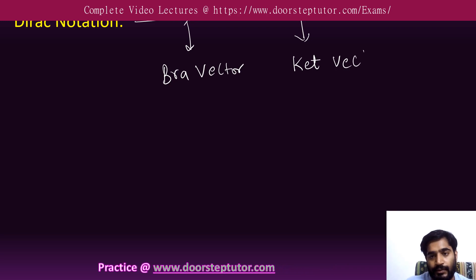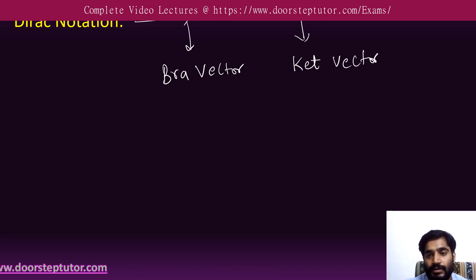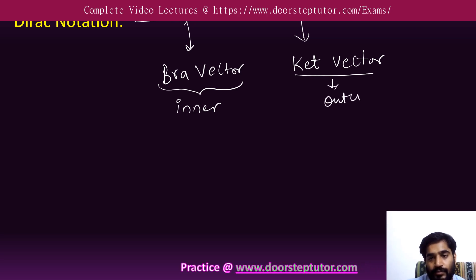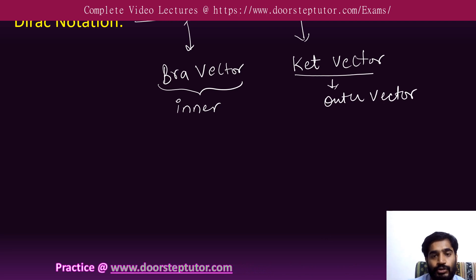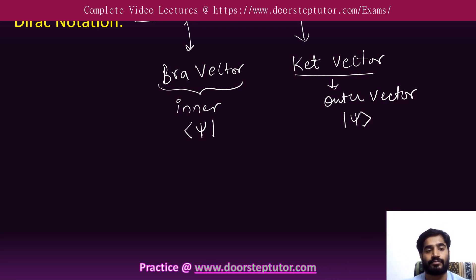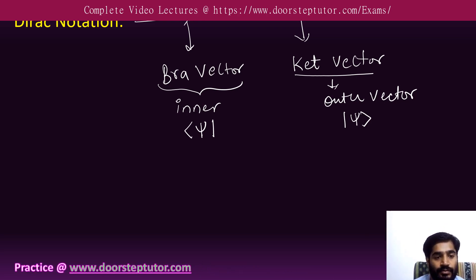Why is this called bra vector and ket vector? Bra vector is what we call the inner vector, while ket is known as outer vector. This is pointing toward the inner side so it is called inner or bra vector, while the other is called ket vector.